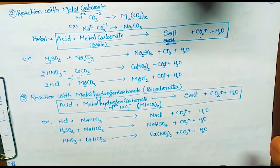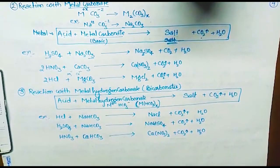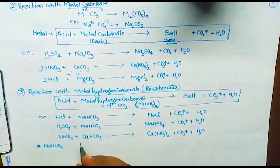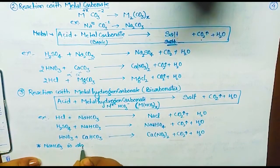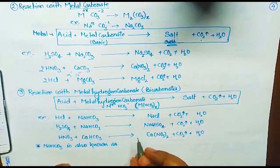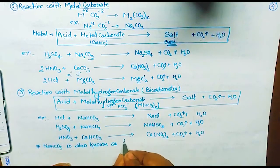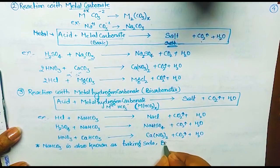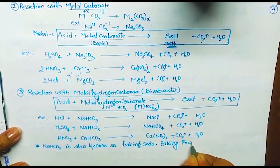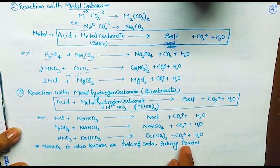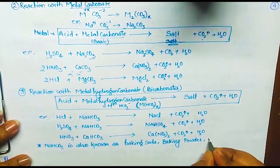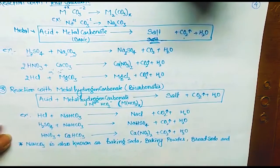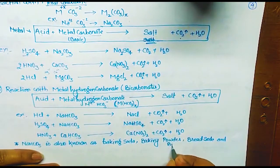Important names for NaHCO3: it is known as sodium bicarbonate, sodium hydrogen carbonate, baking soda, bread soda, and bicarbonate of soda. The difference between baking soda and baking powder will be explained later.